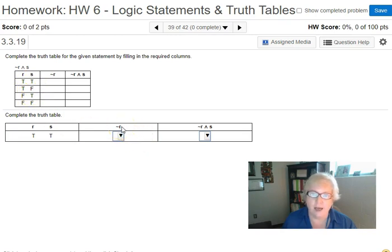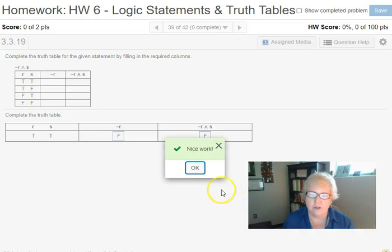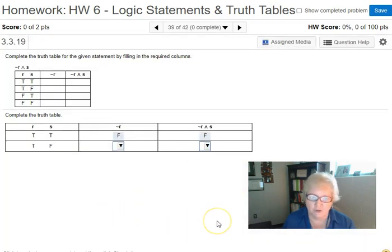First I need the opposite of R. The opposite of true is false. Then I need not R and S. Not R is false, S is true. And is only true if I have true and true, so this would be false. Check that answer and go to the next row.